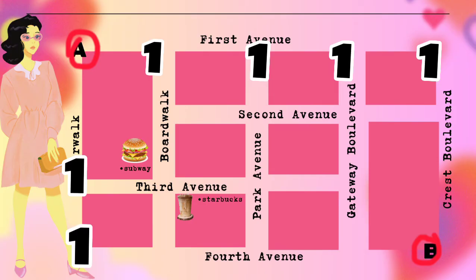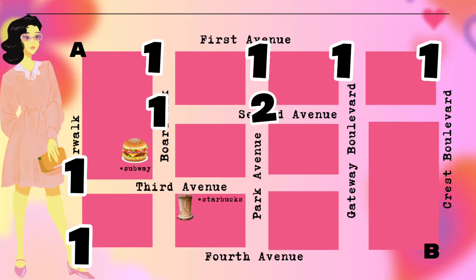So the first number one we see — since there are no other routes to propagate into it — we bring down the number one. Now that brought-down number one, we propagate it to Park Avenue where there is already a number one at the corner of First Avenue, and that will be equal to two.